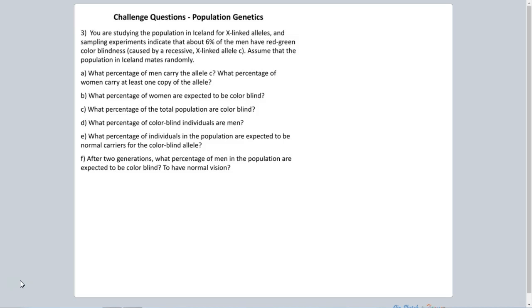So this question here talks about a population in Iceland where the trait is x-linked, and the sampling experiment indicates that about six percent of the men are colorblind, the typical recessive x-linked trait of colorblindness. And we're told to assume that this population mates randomly, that's our key phrase to tell us that this population is definitely in Hardy-Weinberg equilibrium.